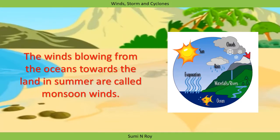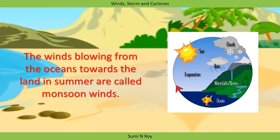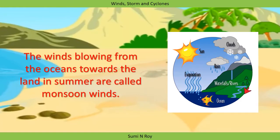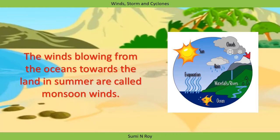The winds blowing from the ocean towards the land in summer are called monsoon winds. Monsoon winds carry a lot of water vapor from the oceans and bring large amounts of rain on land. This process, in which winds coming from the oceans carry water vapor and bring rain, is a part of the water cycle in nature.